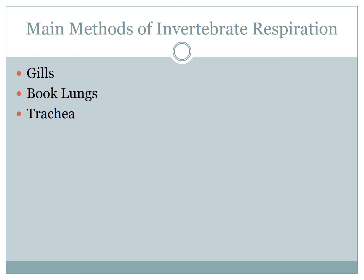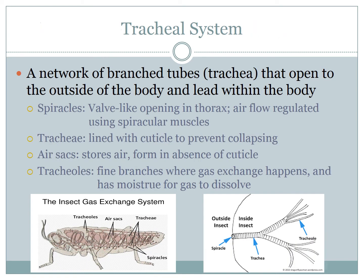We're going to look a little more in depth at this system in this particular podcast. The trachea has a very simple anatomy with a spiracle, or opening to the outside environment, a trachea leading into the body of the insect, and finely branched tracheals extending to the organs where gas exchange can occur.